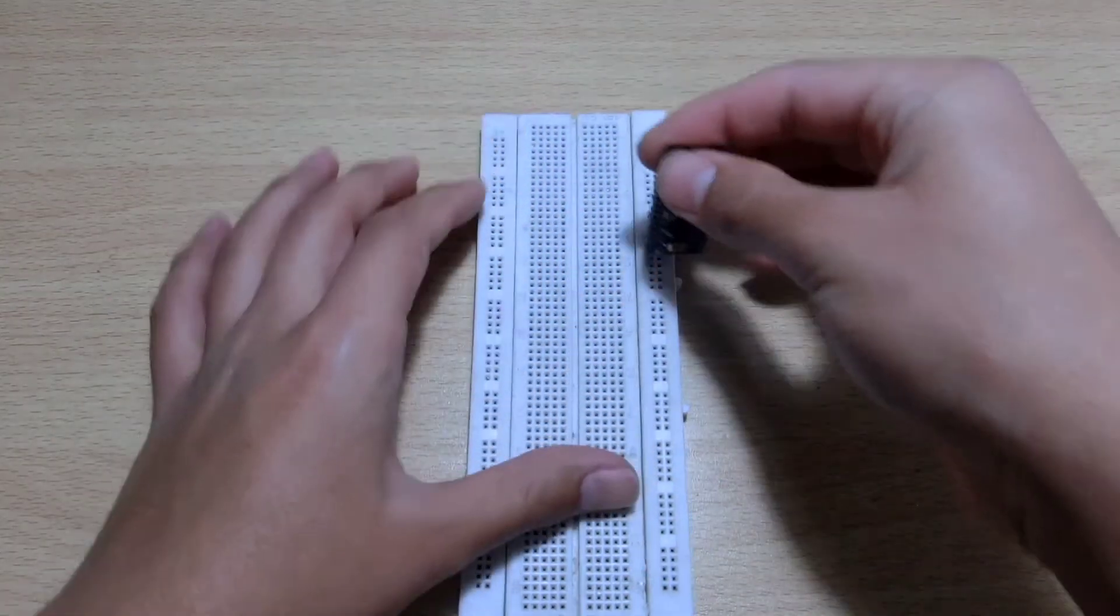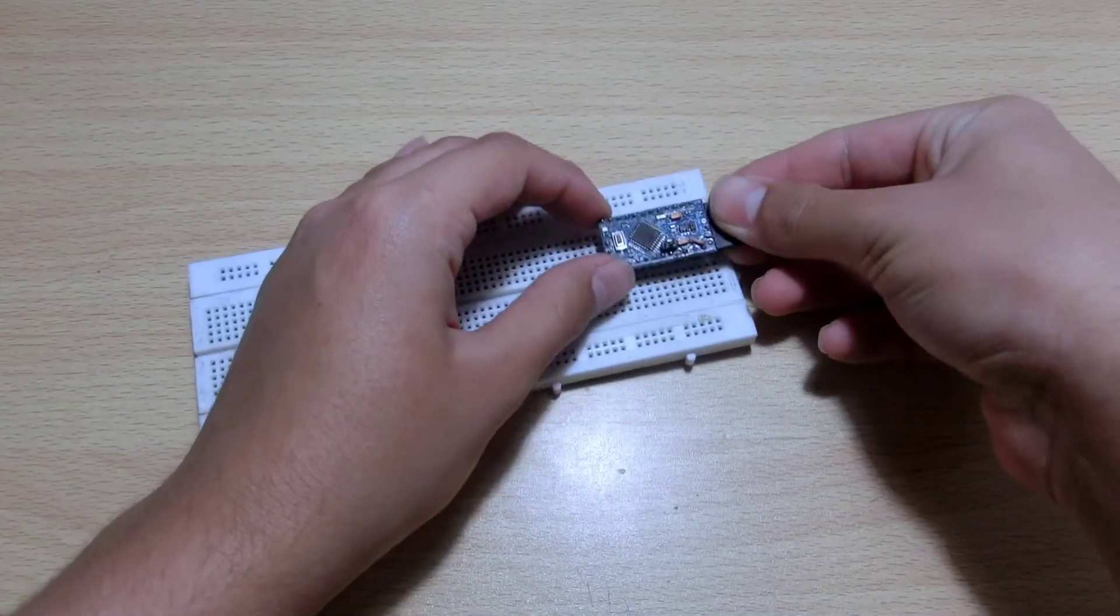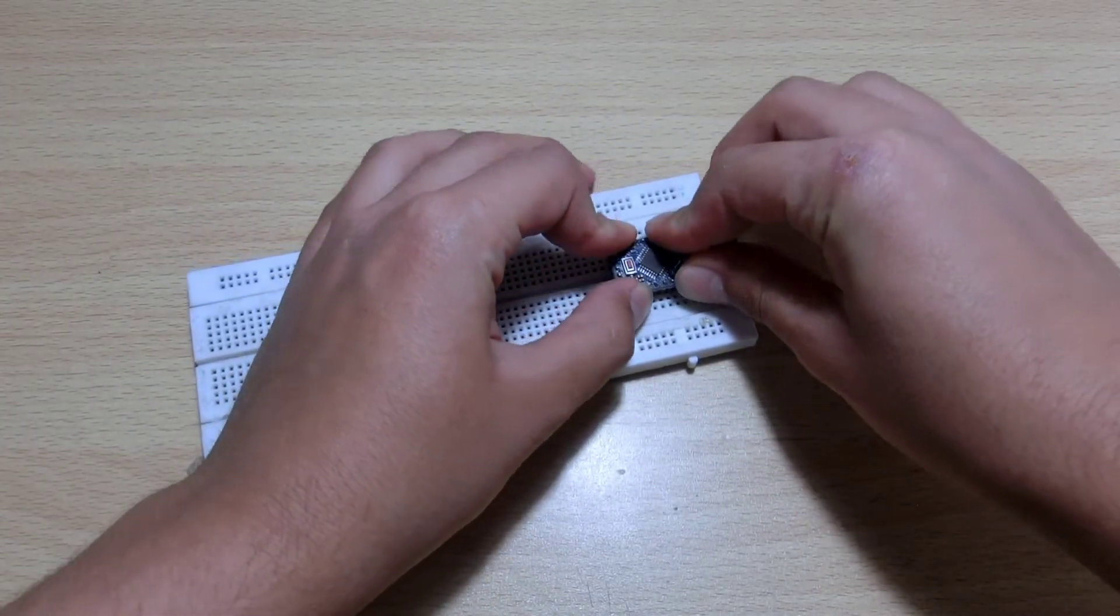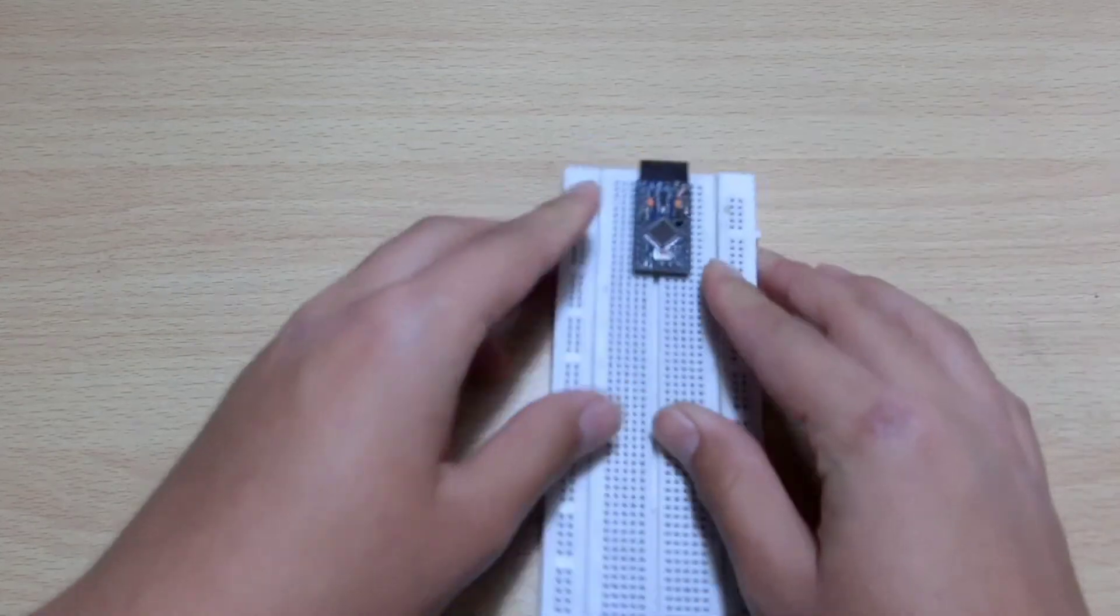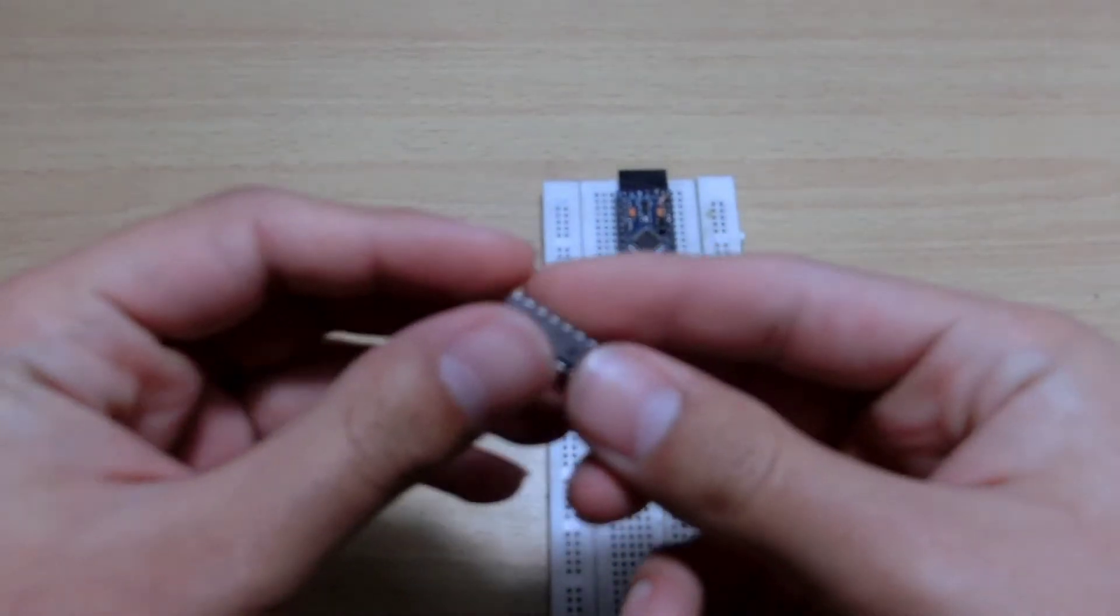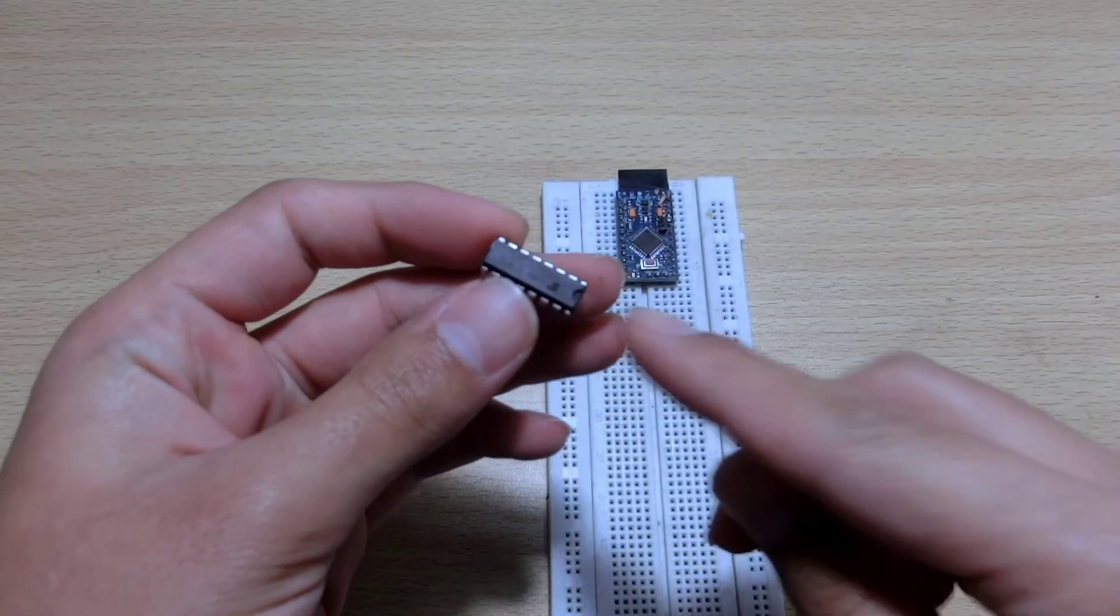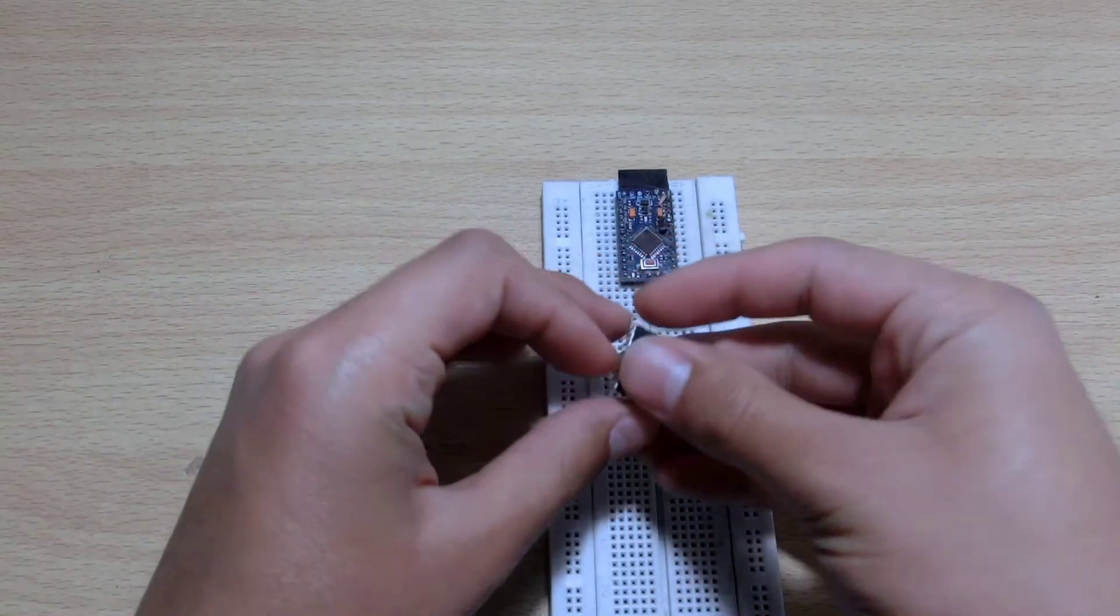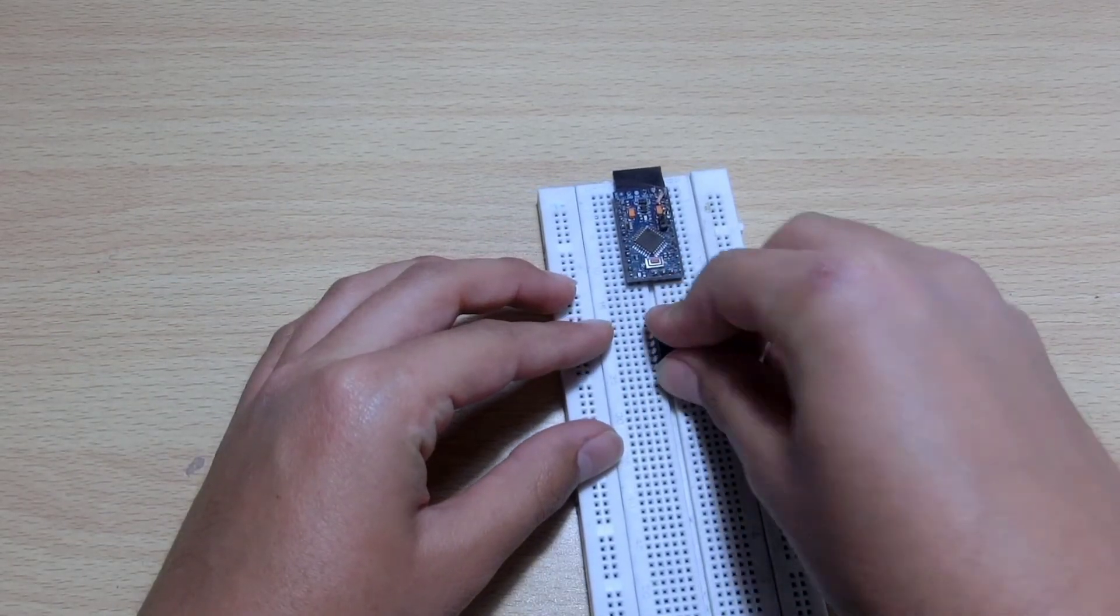Take your breadboard and plug in your Arduino. Take the ULN-2003A IC and plug it in the breadboard such that the notch is facing towards the Arduino.